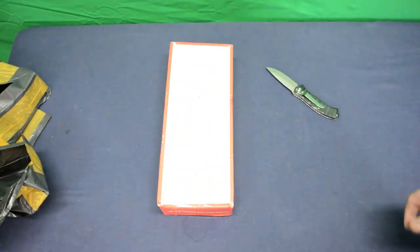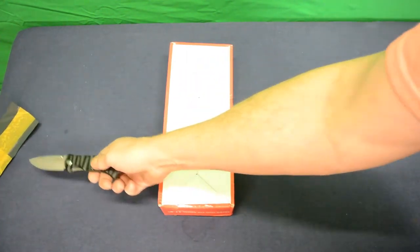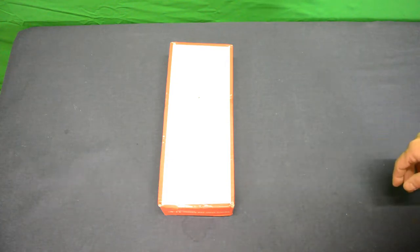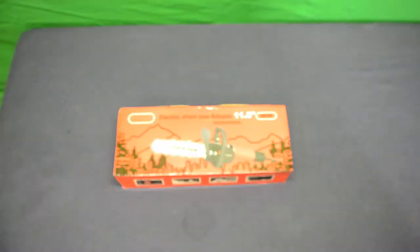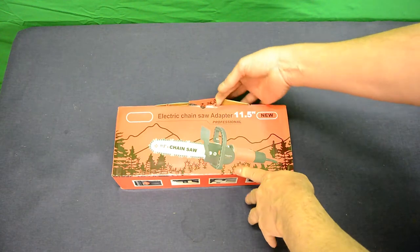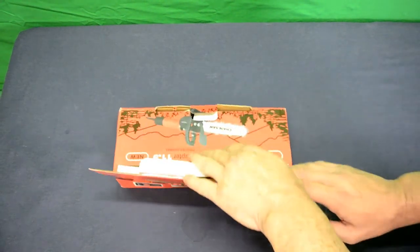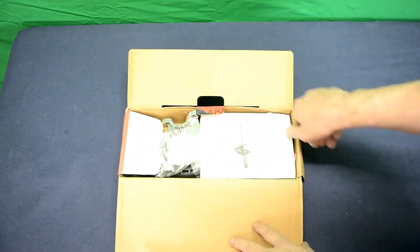Just kind of throw that over that way. Put my too sharp to play with knife away and what we've got here is a chainsaw adapter. So this is supposed to take an angle grinder and turn it into some sort of a chainsaw. So what have we got in the box?